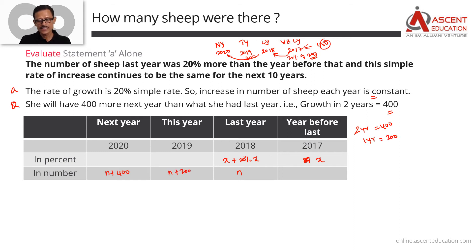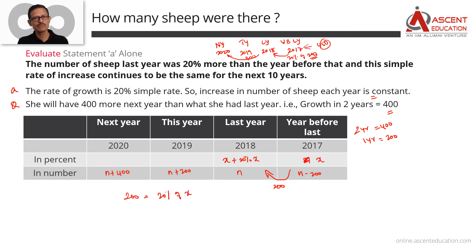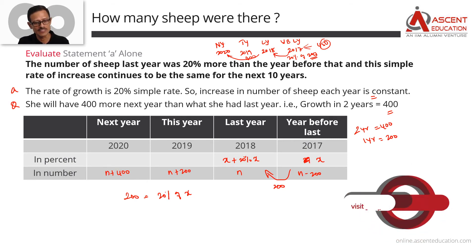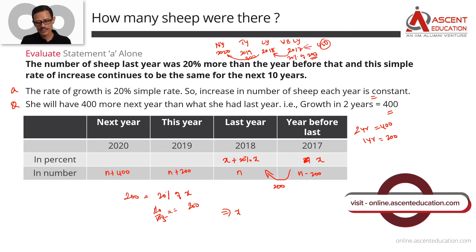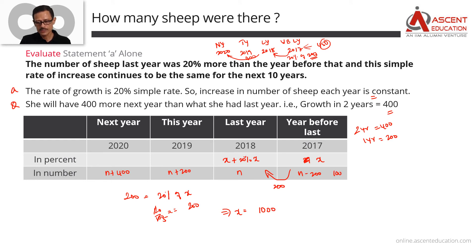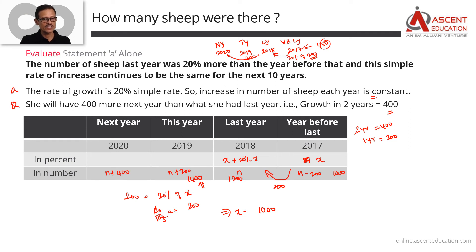So in 2019 it would be n plus 200, and in 2018 it would be n minus 200. The annual increase of 200 equals 20% of x, where x is the number of sheep in 2017. So 20% of x equals 200, which gives x equals 1,000. With an annual increase of 200: in 2017 she had 1,000; in 2018 she had 1,200; and in 2019 she had 1,400. She lost the sheep in 2019, so she lost 1,400 sheep.